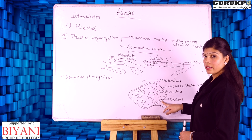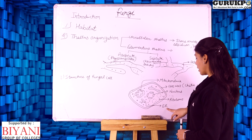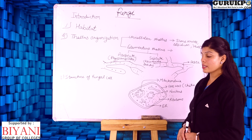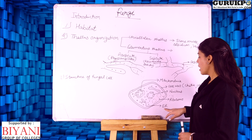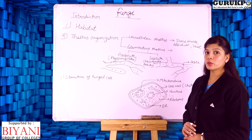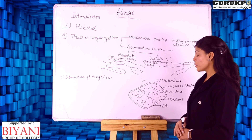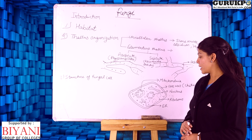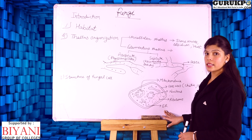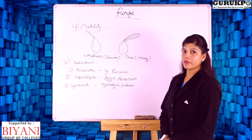Ribosomes are present in the cytoplasm of fungi. The endoplasmic reticulum is of two types: smooth endoplasmic reticulum and rough endoplasmic reticulum. In smooth endoplasmic reticulum, ribosomes are absent, while in rough endoplasmic reticulum, ribosomes are present on the surface.